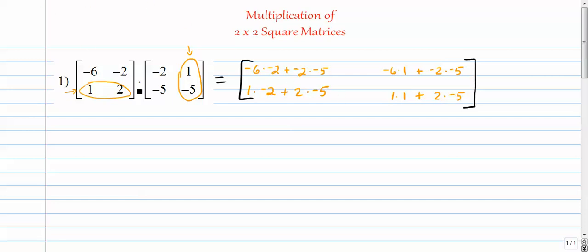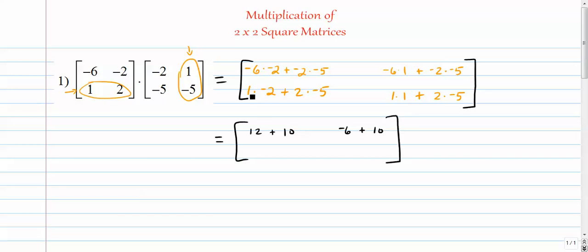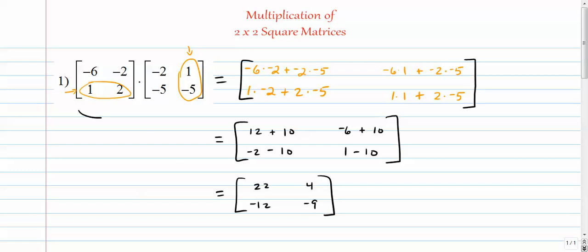Now we're ready to simplify. Negative 6 times negative 2 is positive 12, plus negative 2 times negative 5 is positive 10. Over here, negative 6 plus positive 10. Down here, negative 2 minus 10. Over here, 1 minus 10. Simplifying: 22, 4, negative 12, negative 9. So the product of these two matrices is this 2 by 2 matrix.